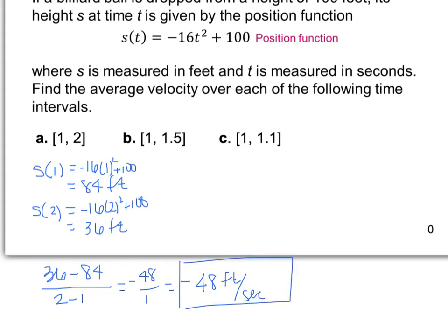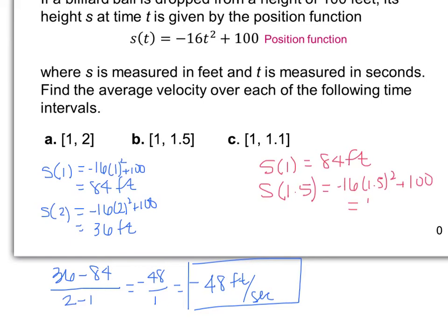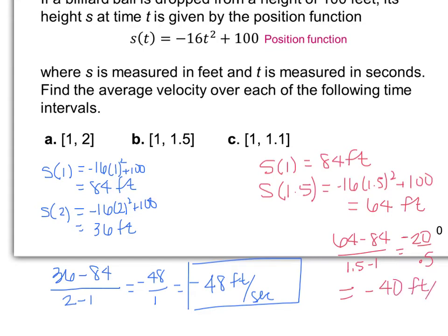For part b, S(1) = 84 feet. S(1.5) = -16(1.5²) + 100 = 64 feet. Average velocity = (64 - 84)/(1.5 - 1) = -20/0.5 = -40 feet per second.